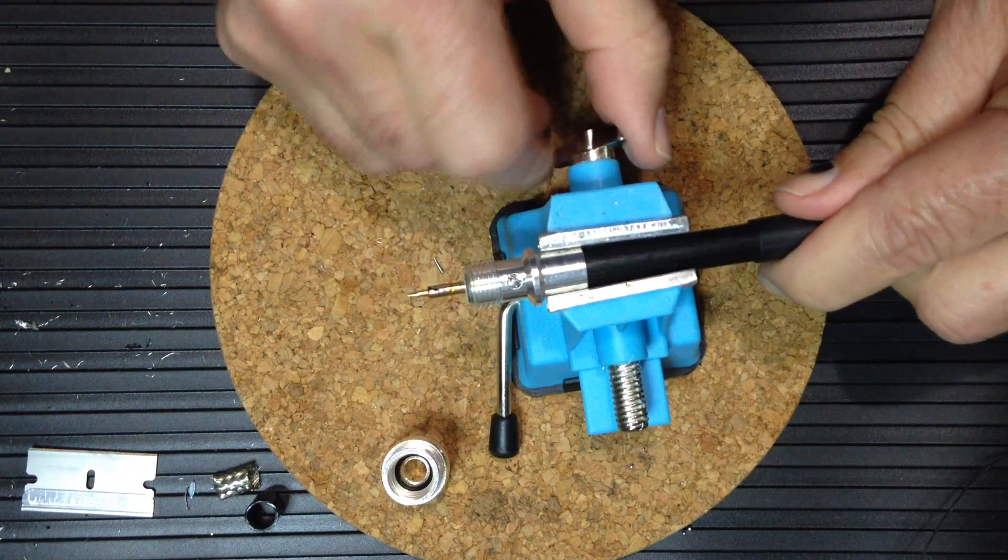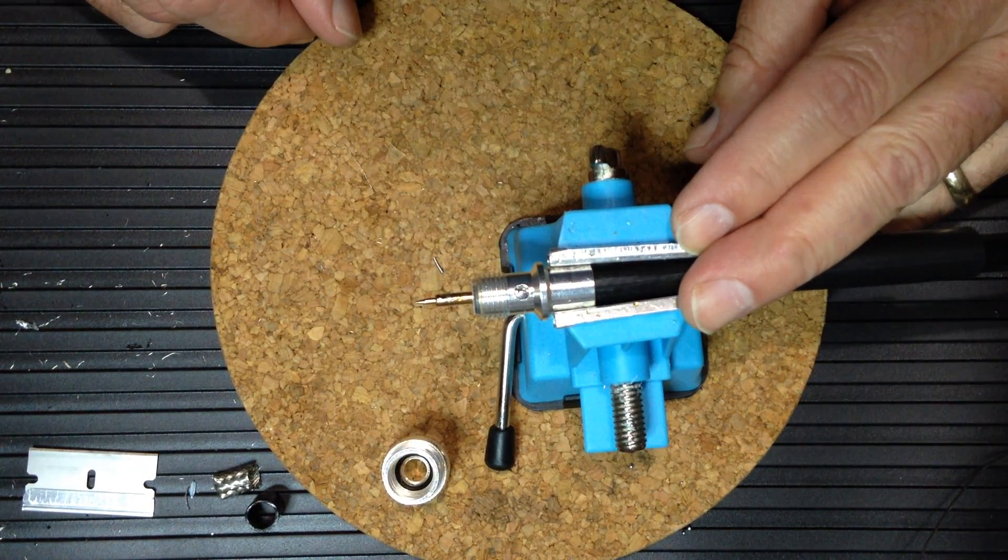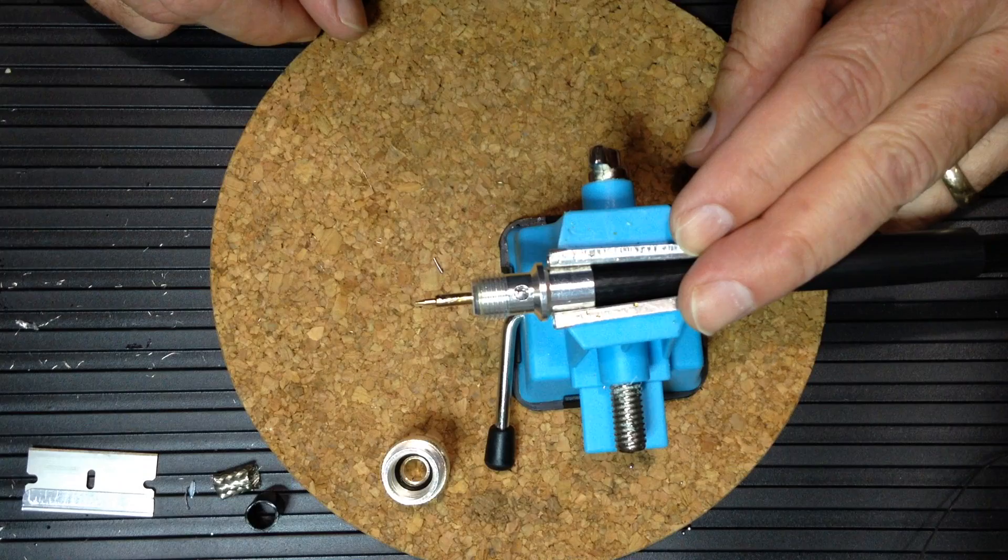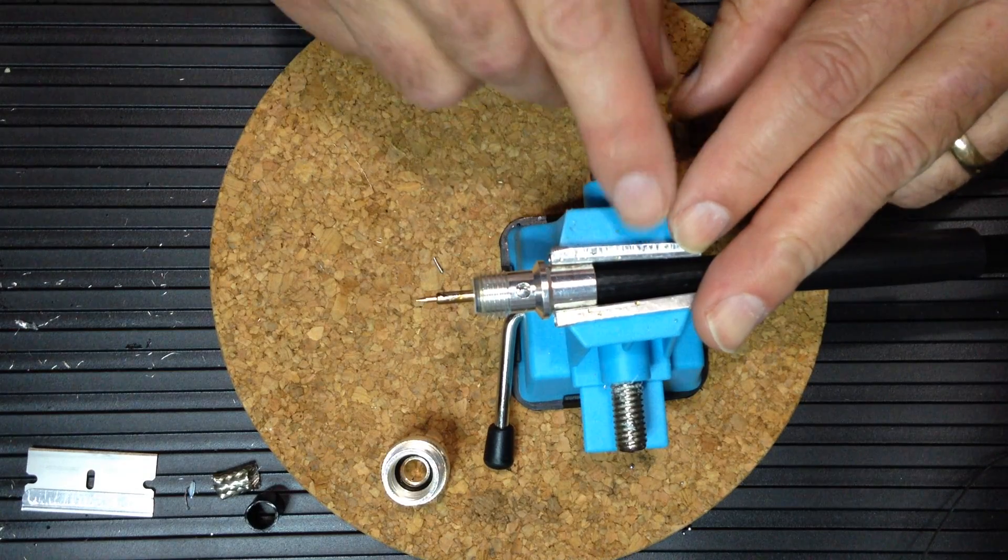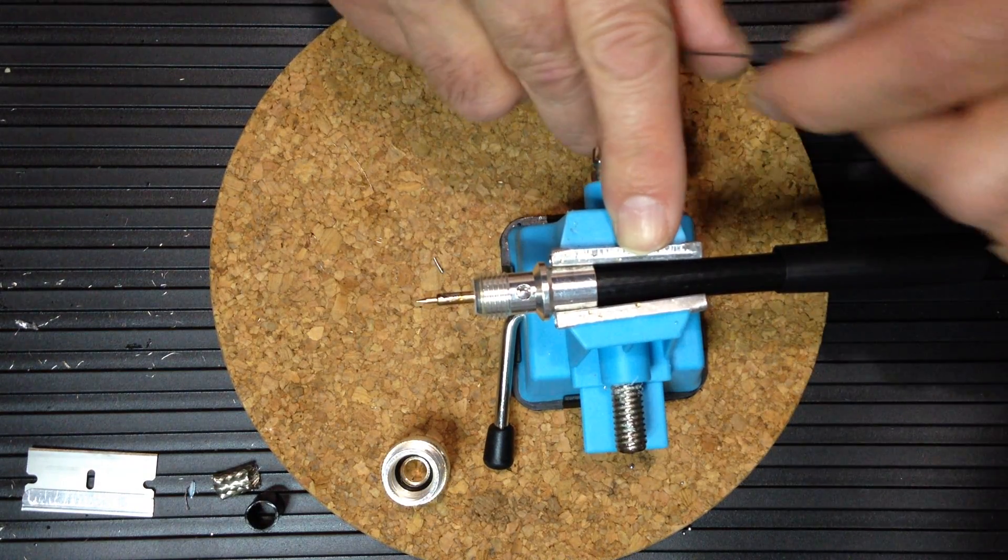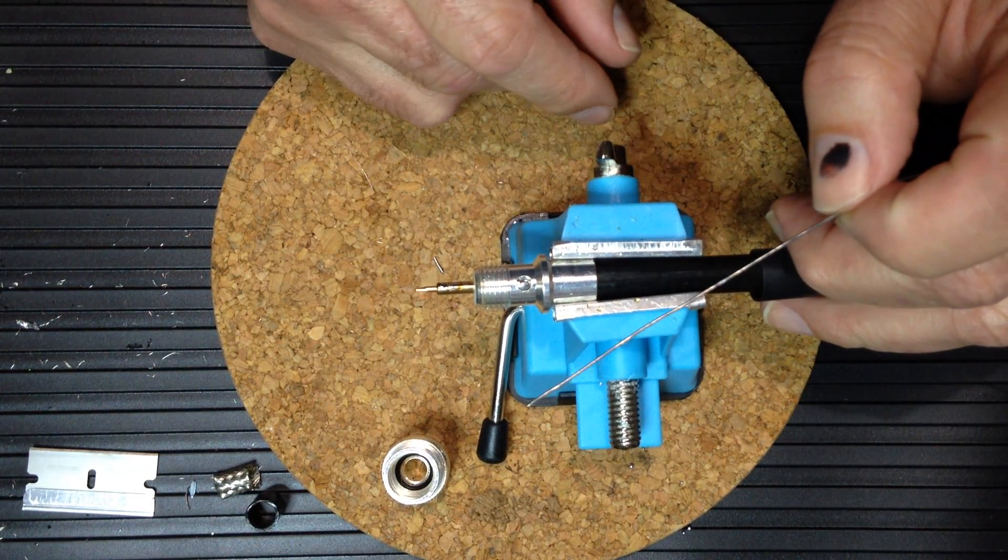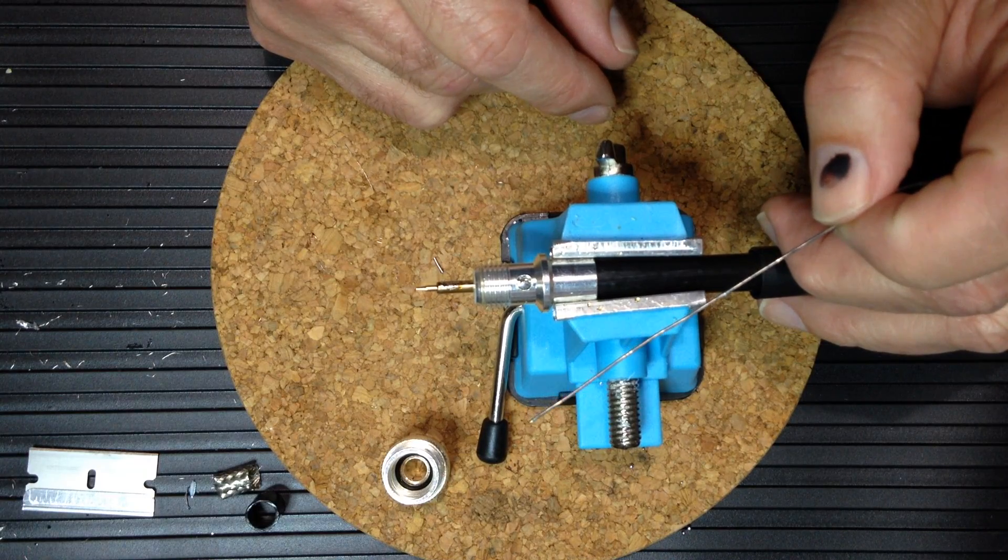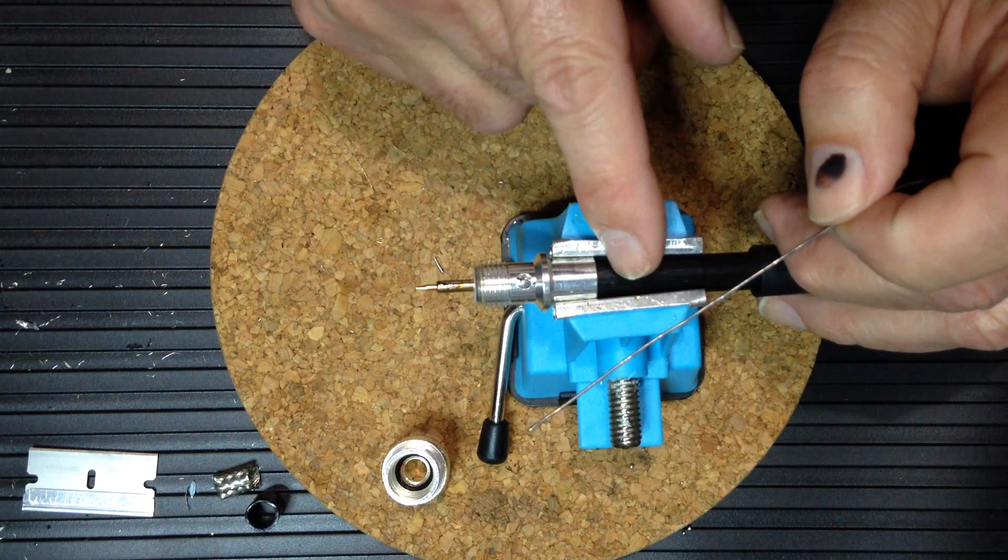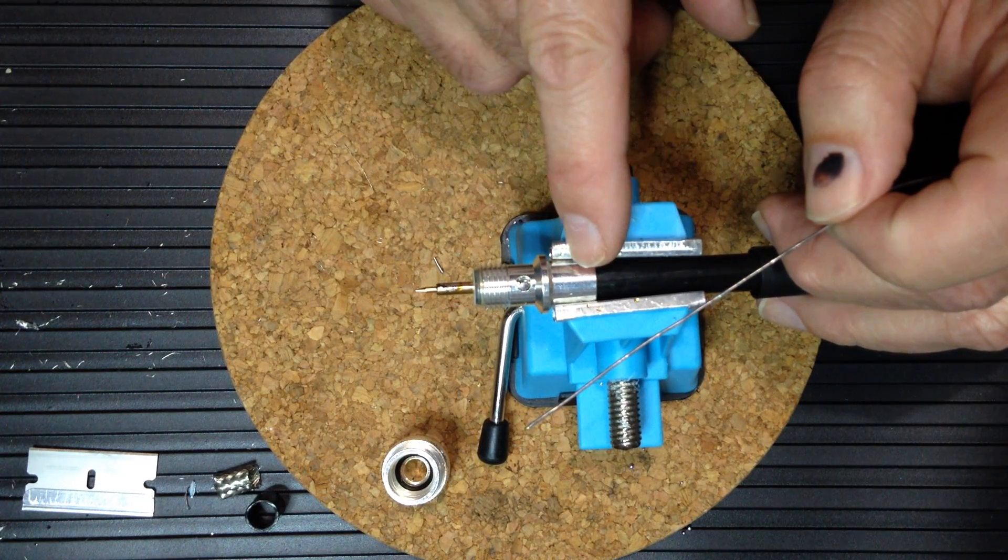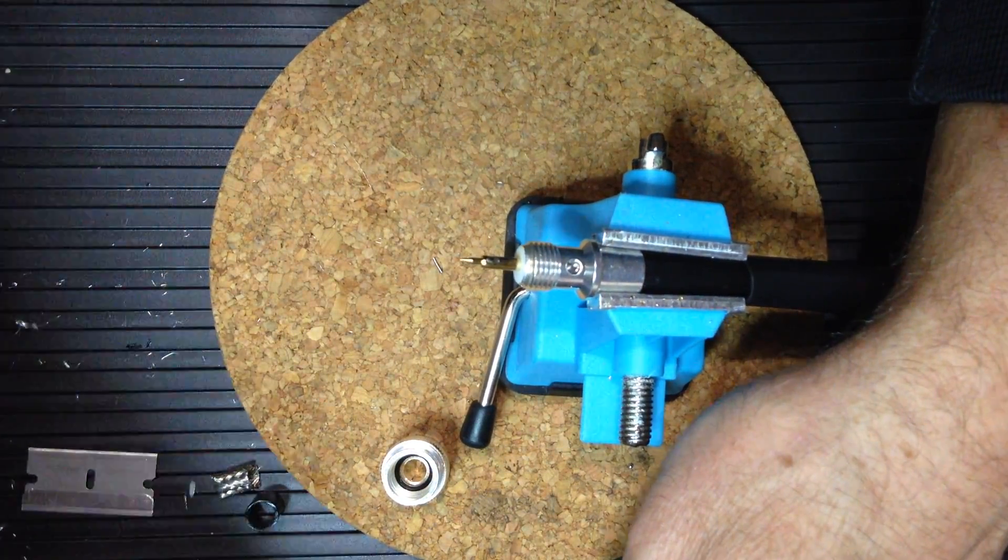Soldering these holes does a couple of things for you. One, it assures good electrical conductivity between the shield braid and the connector. And then it also helps weatherize the connector, reduce the effects of weather and oxidation on the performance of the connector. And also it adds some structural strength to the connector by trapping the shield braid in the solder. You're preventing the coax from untwisting from the body of the connector.